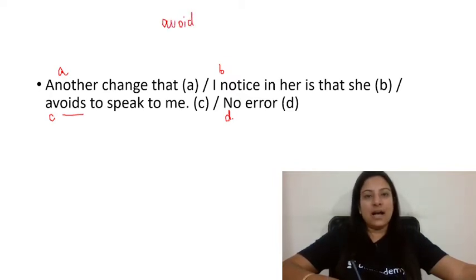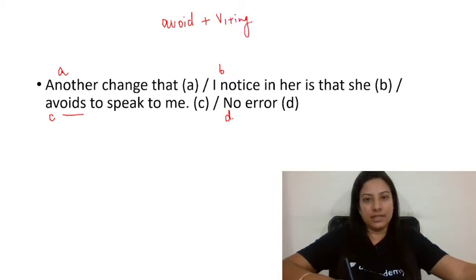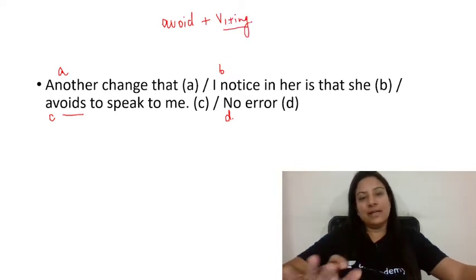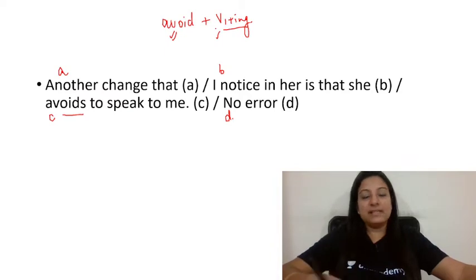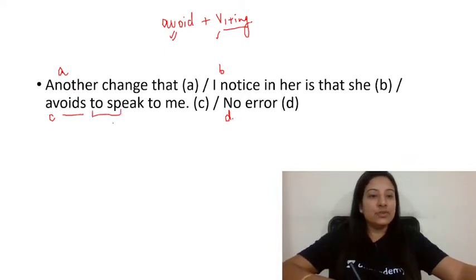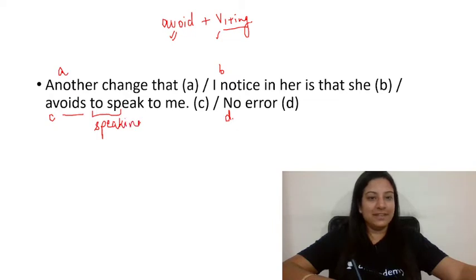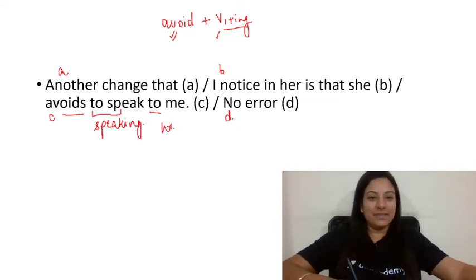After 'avoid', you don't use 'to + V1'; directly V1+ING is used. So 'to speak' is wrong there. Also, there is one more thing — 'to' नहीं आएगा, 'with' आएगा.